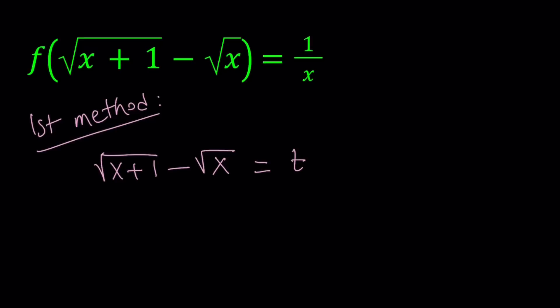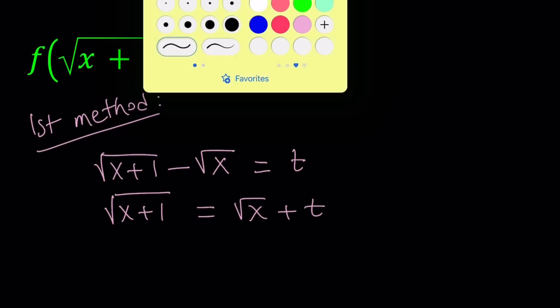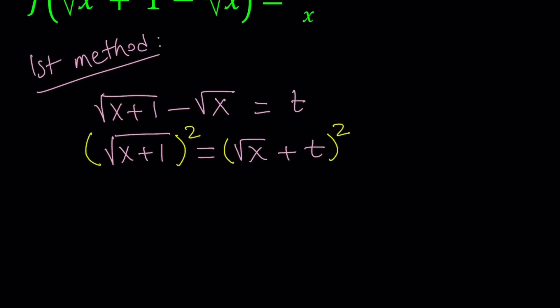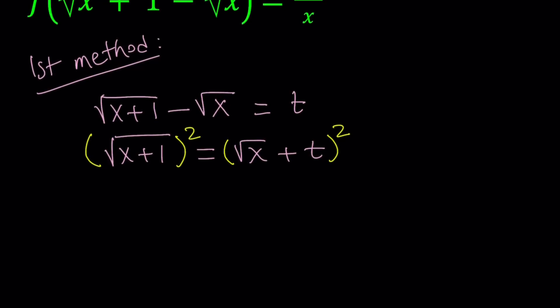Let's isolate the square root of x plus 1 on the left-hand side by adding square root of x to both sides, and then squaring both sides. The idea is to separate the radicals first, put them on different sides, then square to eliminate the radicals. The left-hand side gives us x plus 1. The right-hand side is like (a + b)² = a² + 2ab + b², which gives us x plus 2t times square root of x plus t squared.